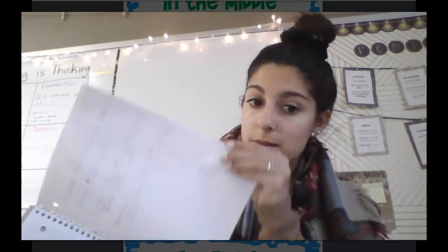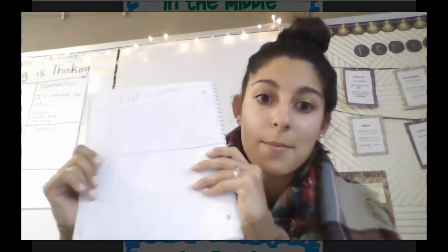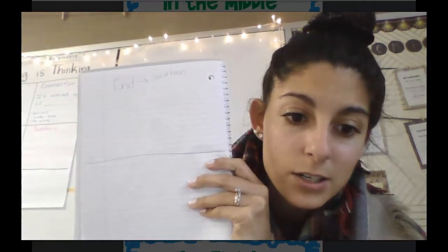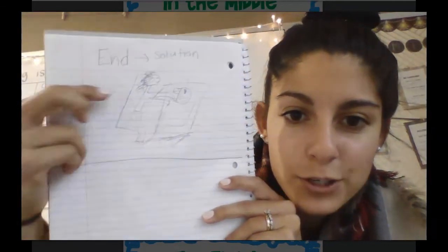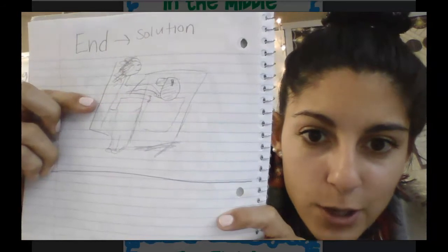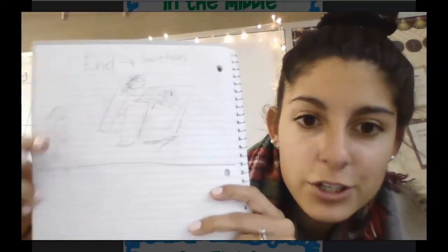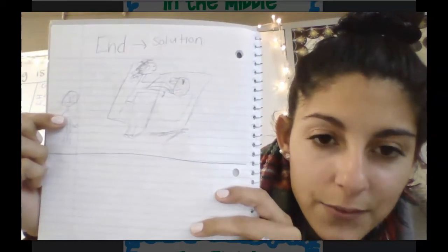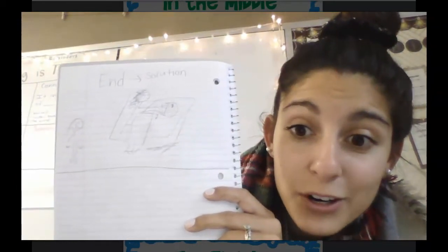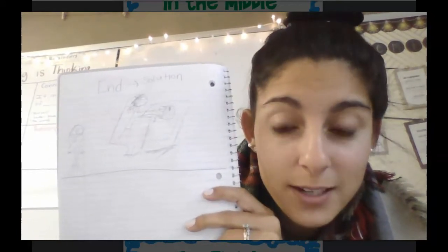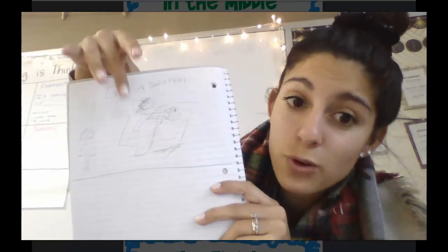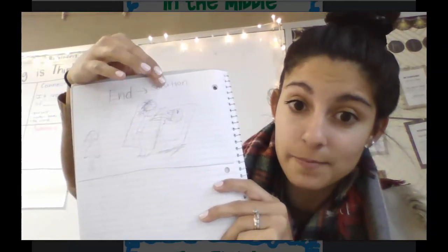This is the solution — if you're not sure what your solution was, go back and look at your graphic organizer from yesterday. My solution was that the mom makes a coat just like the one Daniela wants. So I drew a picture of the mom sewing the jacket, and Daniela looking happy as her mom makes it for her.